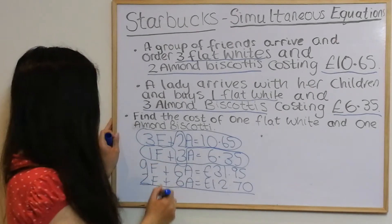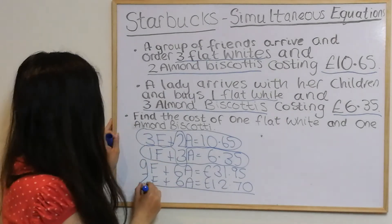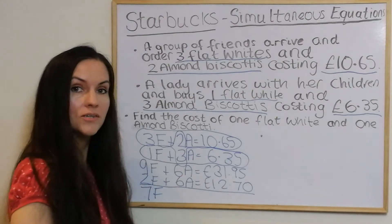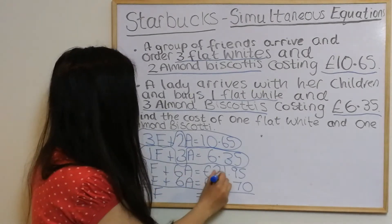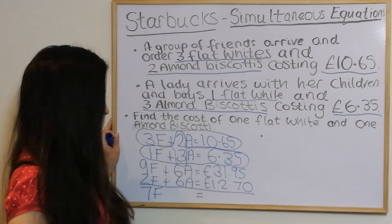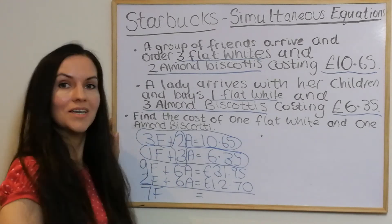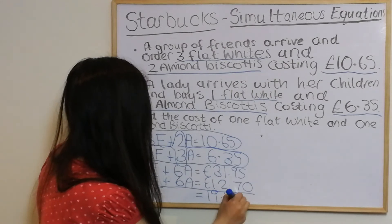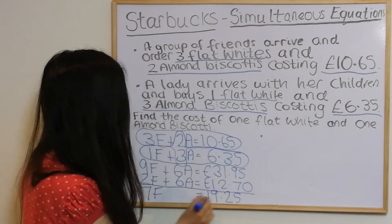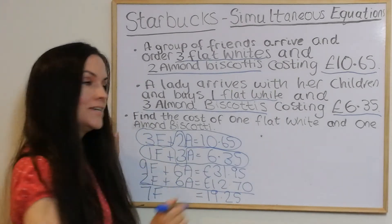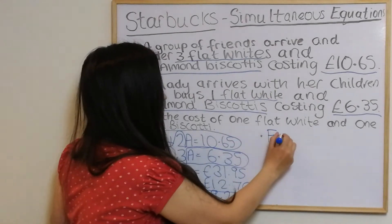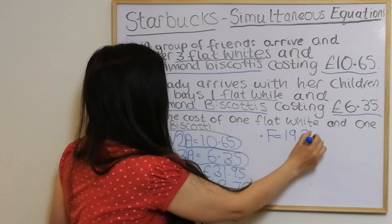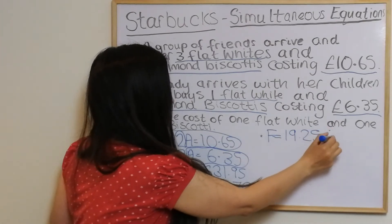Subtracting: 9f take away 2f is 7f, and 6a take away 6a disappears. Then thirty-one pounds ninety-five take away twelve pounds seventy gives us nineteen pounds twenty-five. So 7 flat whites cost nineteen pounds twenty-five, and to find the cost of one flat white we divide nineteen pounds twenty-five